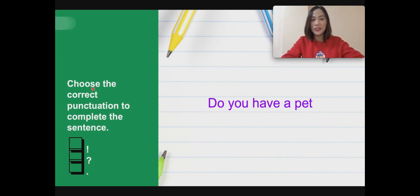This time, you need to choose the correct punctuation to complete the sentence. The sentence is, Do you have a pet? Do you have a pet? Okay. So you need an exclamation mark, a question mark, or a full stop. Okay. Which one do we use when we're asking a question?